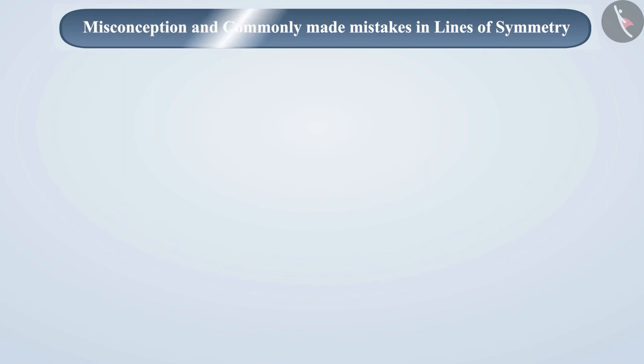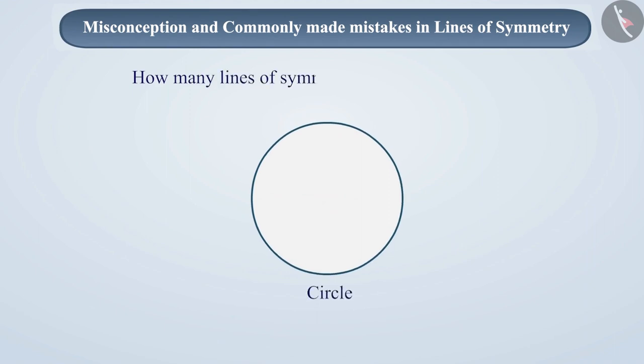Let's discuss some commonly made mistakes in lines of symmetry. If we ask students about the number of lines of symmetry in a circle, without using the knowledge of lines of symmetry, they say that a circle has no lines of symmetry.